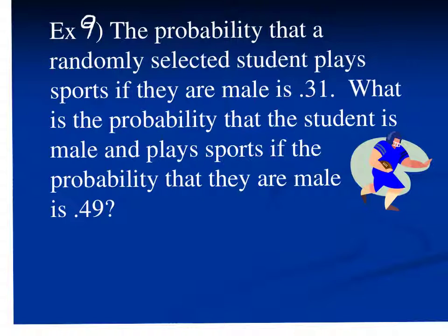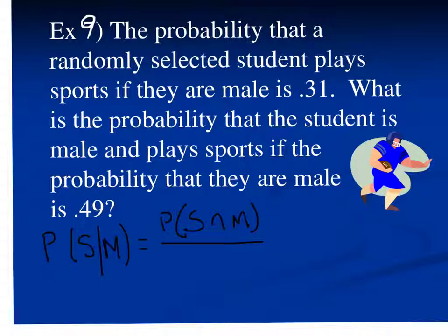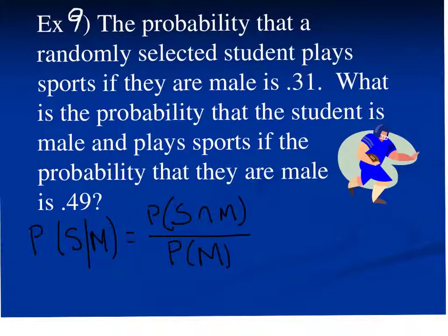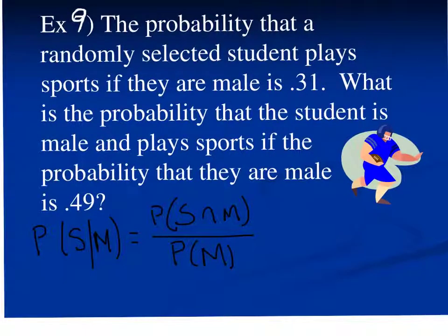We are going to use the probability of a student playing sports given that they are male. That gives us the formula: the probability of both sports and male, divided by the probability of being male. In this case, I'm given the probability of a student playing sports given they are male, which is the left side of my formula.